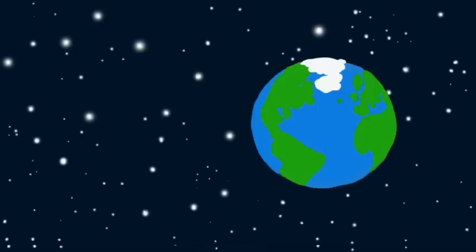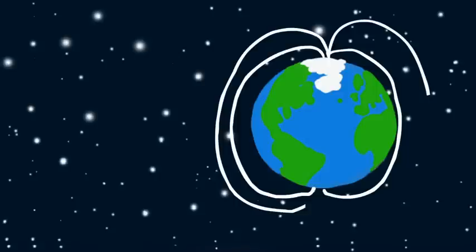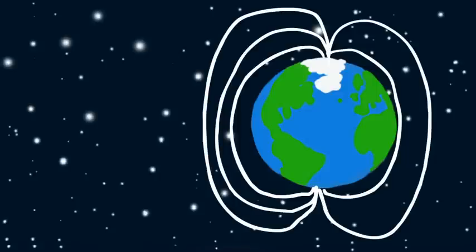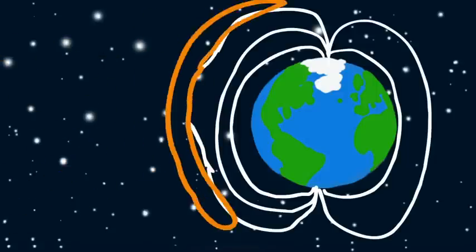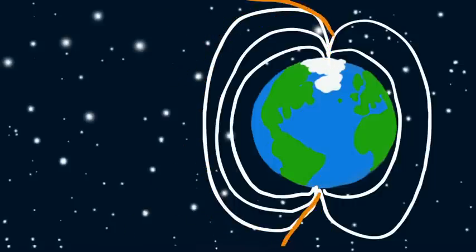It will reach the Earth in 18 hours. The Earth stops the storm with its own magnetic field. The two fields couple together, stretch over the Earth, and create a magnetic storm until the field breaks off.